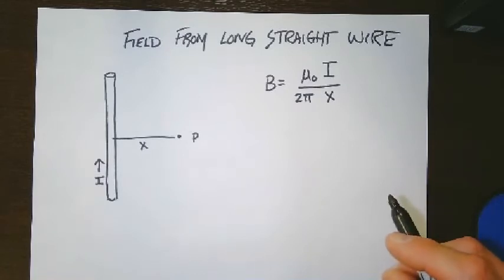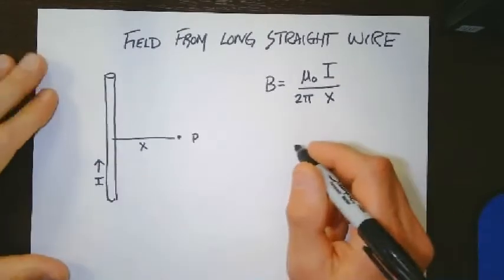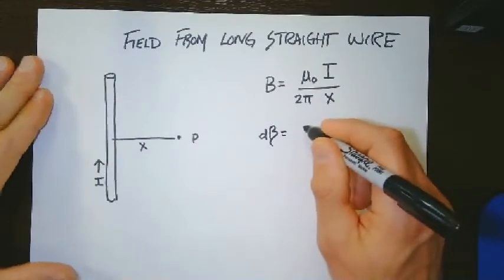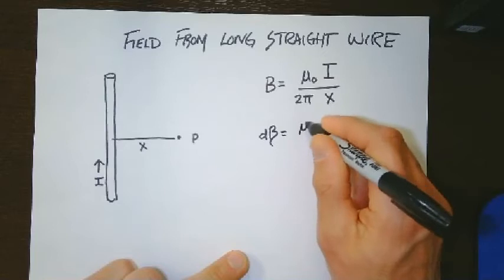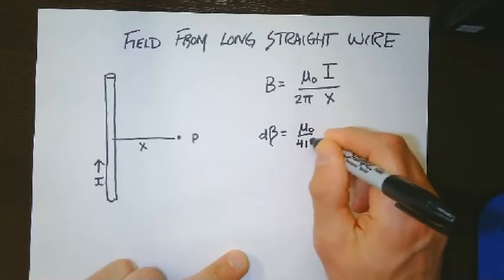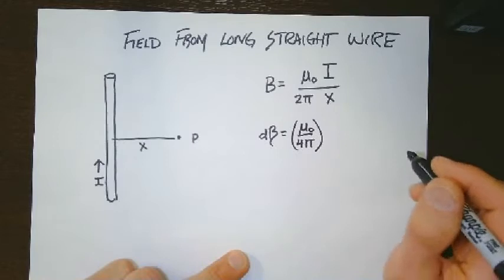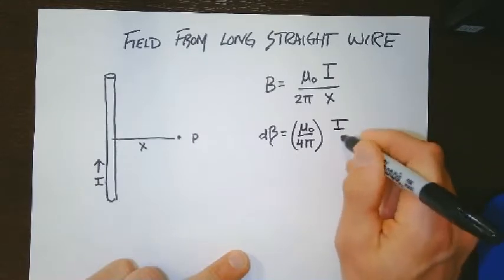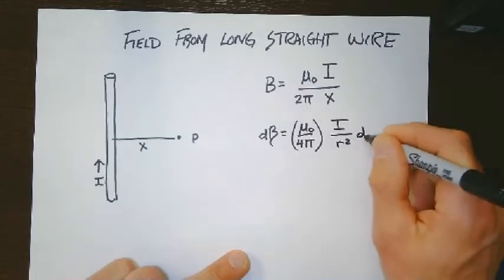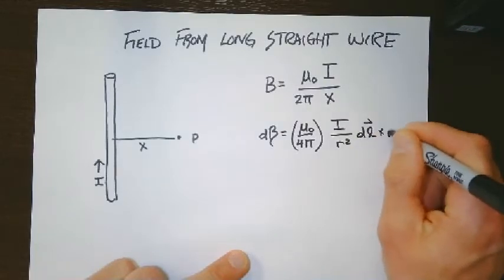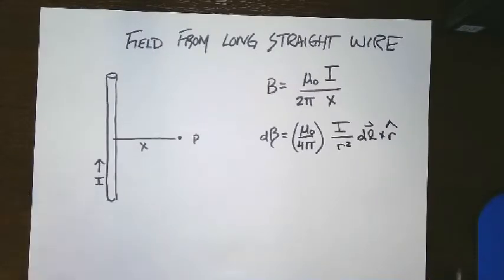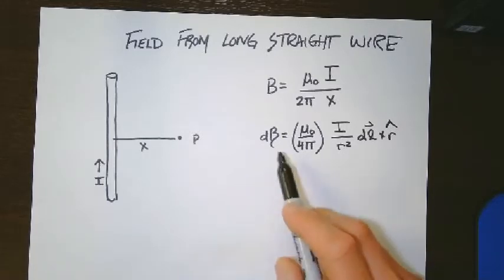So how do we get this from the law of Biot-Savart? The law of Biot-Savart says dB is equal to constant... oh my gosh, there it is. And if you're thinking that we're going to have to do an integral, you're right.